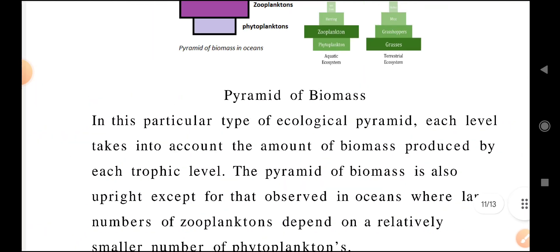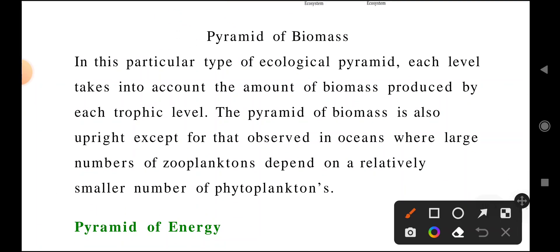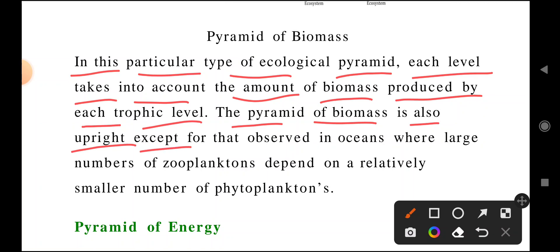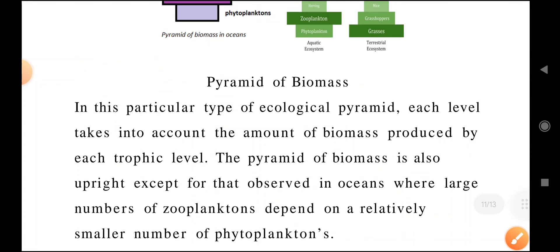In this particular type of ecological pyramid, each level takes into account the amount of biomass produced by each trophic level. The pyramid of biomass is also upright except in oceans.